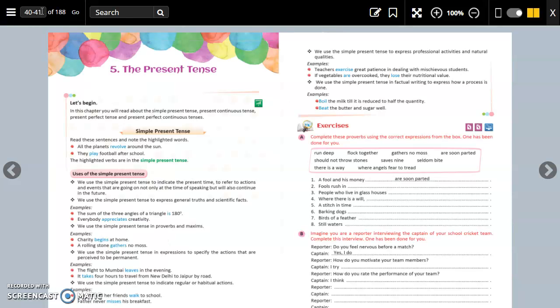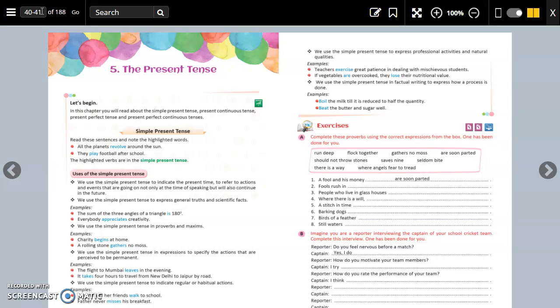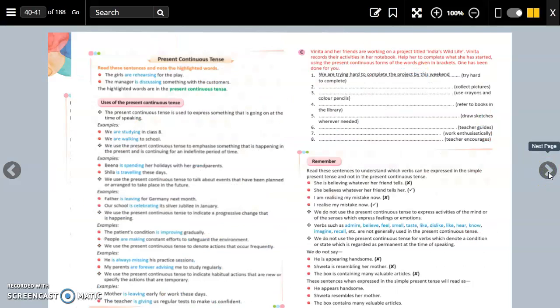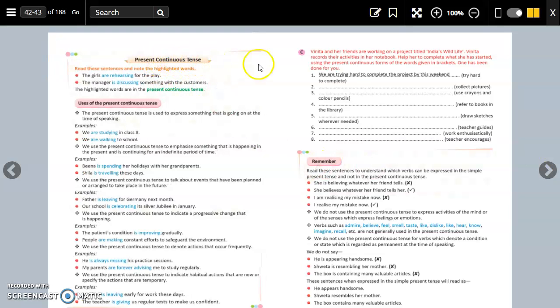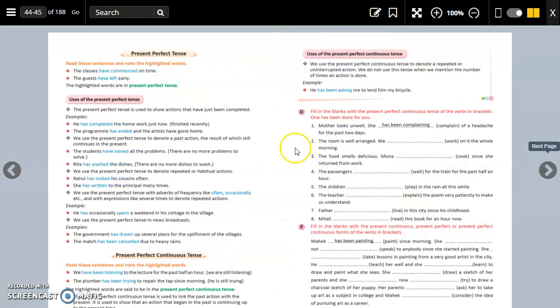This is your grammar textbook page, lesson number 5. It is page number 32 in your textbook, the present tense. So we will be studying about simple present tense, then present continuous tense, then present perfect tense and present perfect continuous tense.